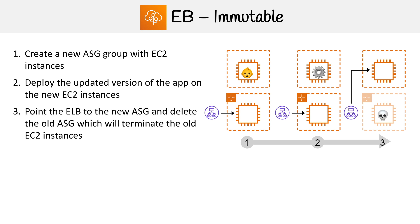Then we're going to point that elastic load balancer to the new ASG, and then we're going to delete the old ASG, which is going to terminate all the old instances.